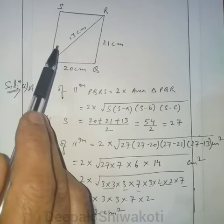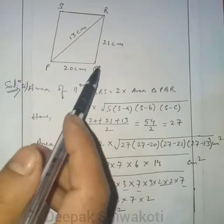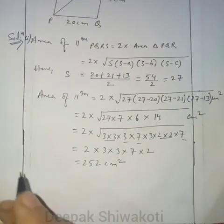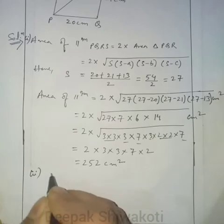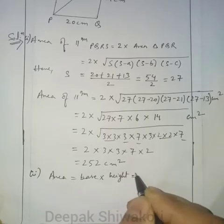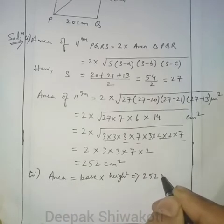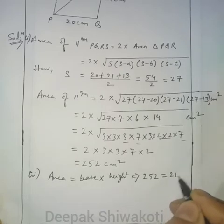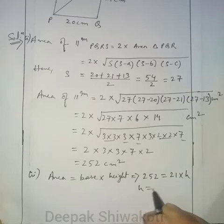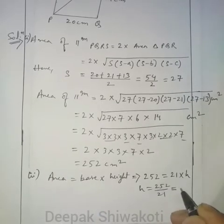Using the formula: area equals base into height. The area is 252 and the base is 21 cm. So 252 = 21 × H, which gives H = 252 ÷ 21 = 12 cm. So the distance between the longer sides is 12 cm.